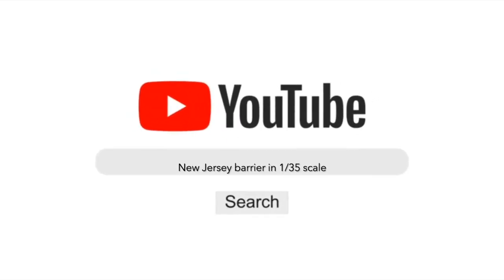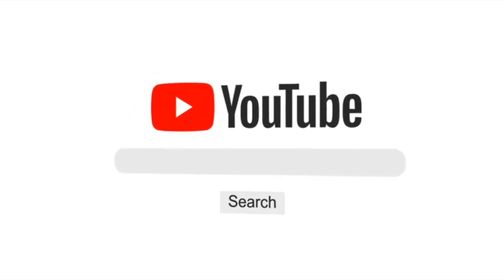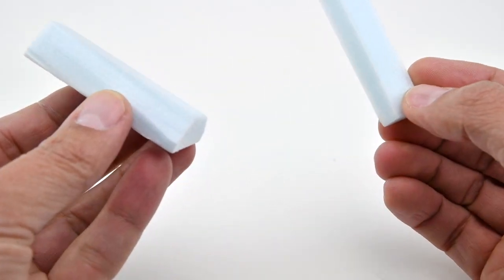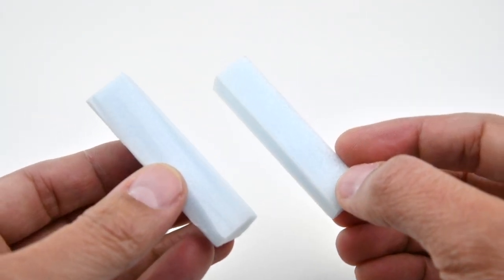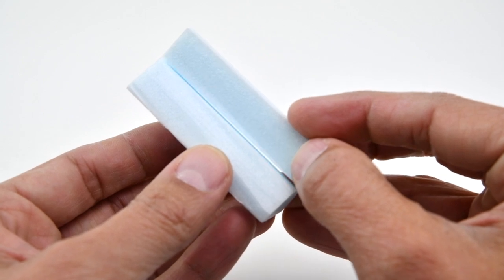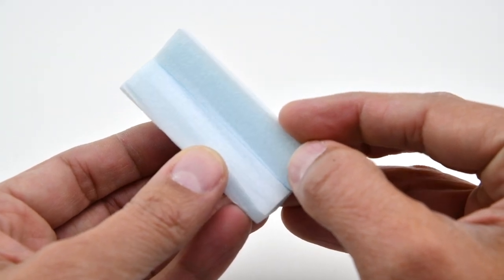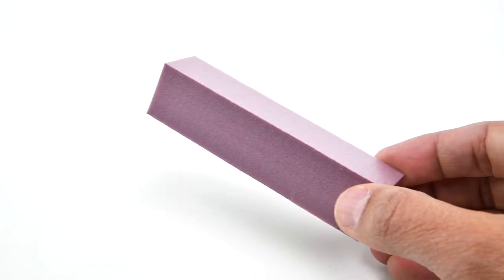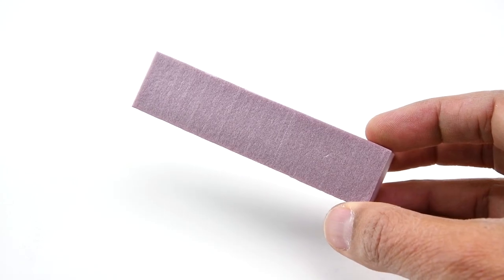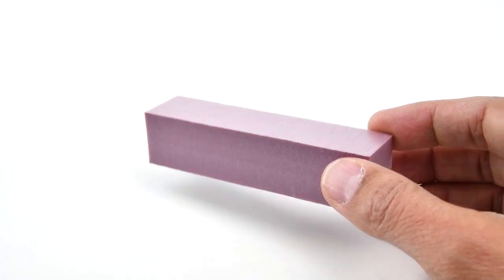After searching for tutorials on how to create those roadblocks, most of what I found were a two-piece process in which you have to cut two separate pieces of foam and glue them together. I wanted a process to create barriers in one single piece of foam, a procedure that can be easily replicated and anyone can use it.